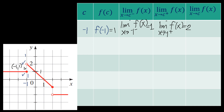Now, the two-sided limit — kapag wala na yung symbol plus or minus on top, ibig sabihin you are referring to left and right. The limit of f of x as x approaches negative 1: sa left ang limit ay 1, sa right ang limit ay 2. Dahil hindi pareho ang 1 at 2, they are not equal kahit nag-exist sila. So the limit of f of x as x approaches negative 1 does not exist. Hindi kasi nag-connect ang left at right — iba ang pinupuntahan ng y sa left at iba sa right.